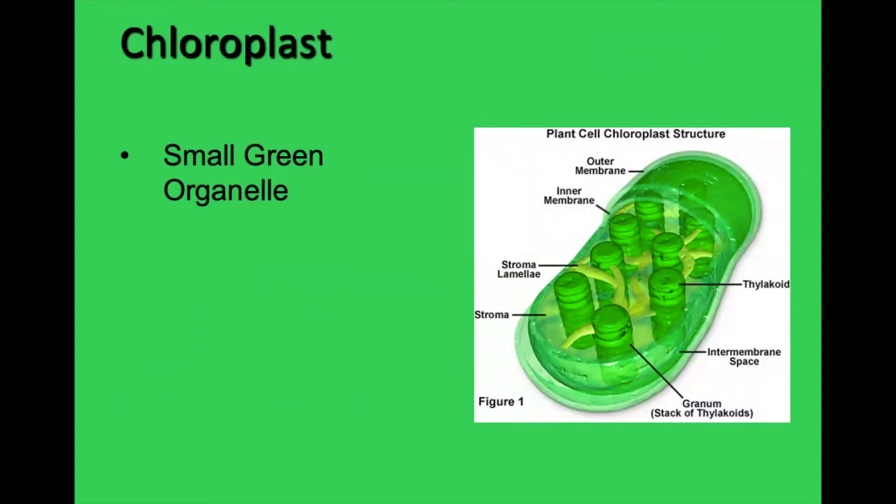So let's talk about that chloroplast since it's so important for the plants. It is a small green organelle. Here it is. Here's the picture. If you're writing your notes down on loose leaf, I would suggest trying to draw this and labeling it. If you are doing this on a Google doc or a Word doc, feel free to copy and paste, take a screenshot of that.